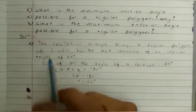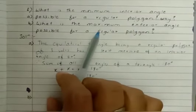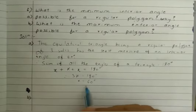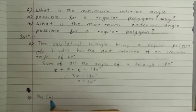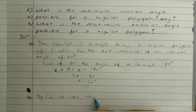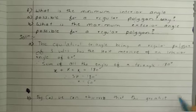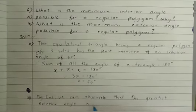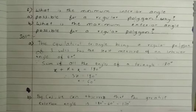Now let us solve part B: what is the maximum exterior angle possible for a regular polygon? Since the interior angle is 60 degrees, the exterior angle will be 180 minus 60. We can observe that the greatest exterior angle is 180 degrees minus 60 degrees, which gives 120 degrees.